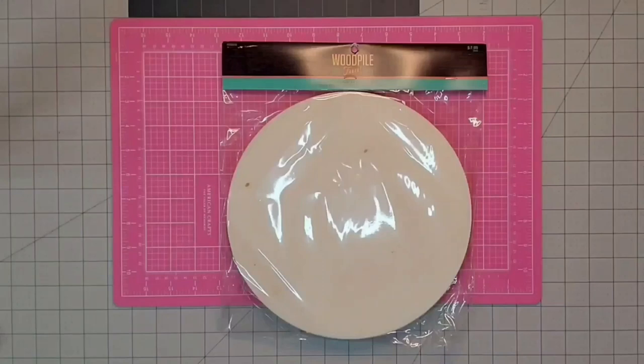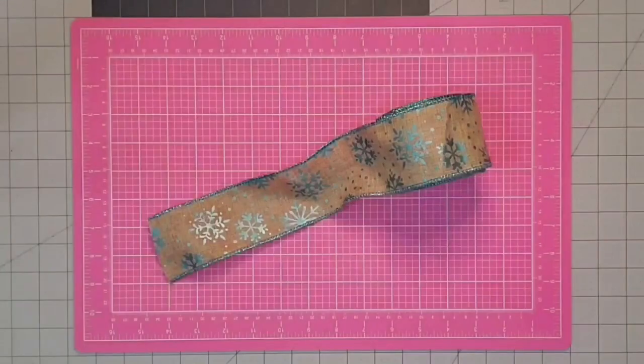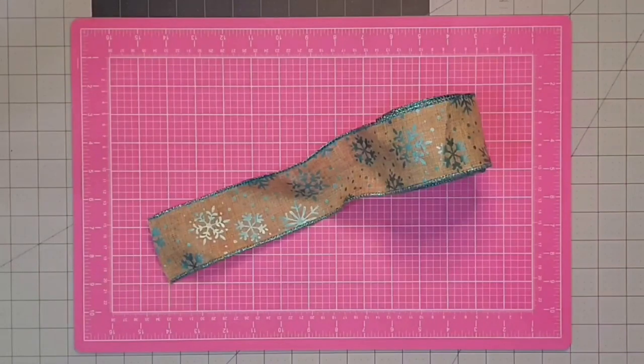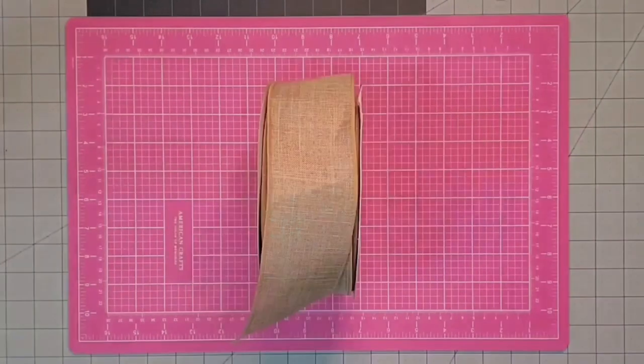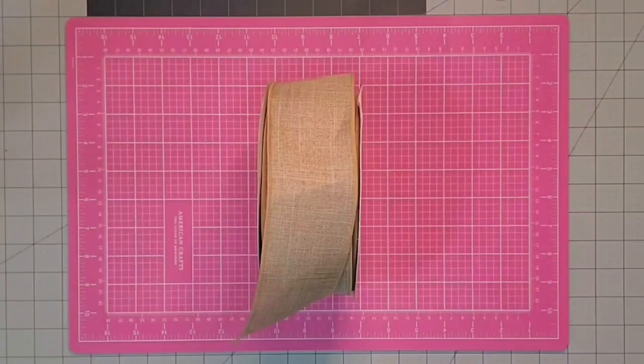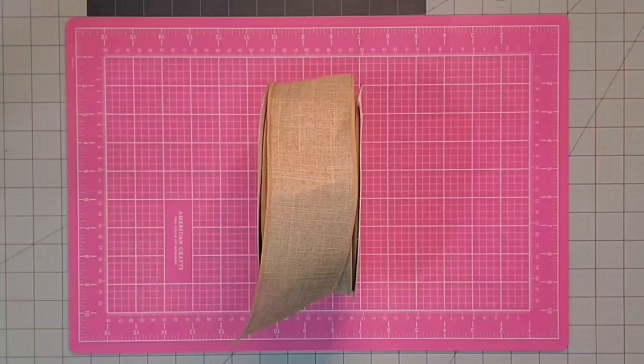I'm going to be using one of these wood rounds that I got from Hobby Lobby, this inspiration ribbon with a burlap background and beautiful blue snowflake on it. It is wired but I'm going to be taking that out for part of the craft. I'm also going to be using a bit of this wired ribbon that's also two and a half inches and looks very much like burlap.